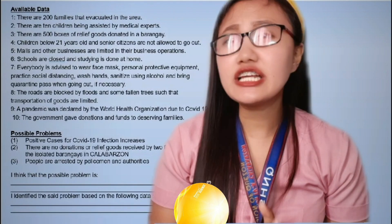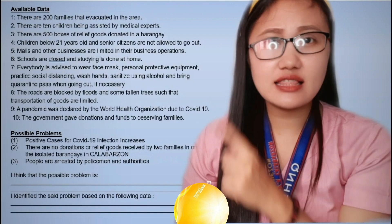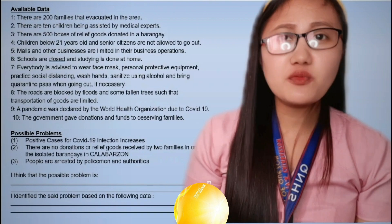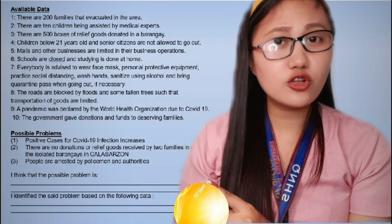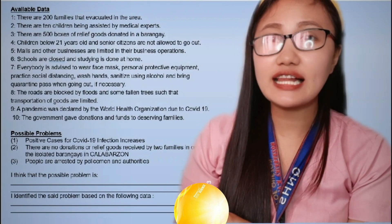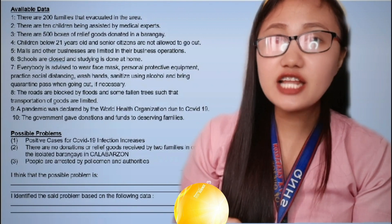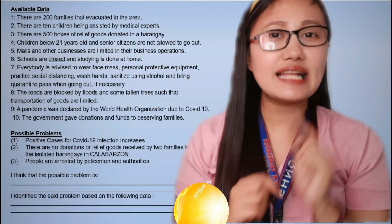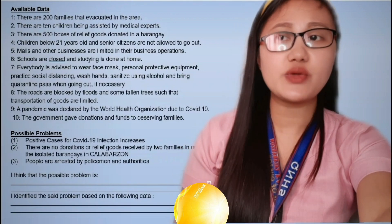For Learning Task Number 1, given dito yung available data — this is Column A. And Column B, this is the possible problem. Mapapansin nyo sa Column A, meron ditong 10 available data. At dito naman sa Column B, ay meron 4 tayong possible problems. Ang gagawin nyo sa Learning Task Number 1 is pupunan nyo lang itong nakalagin dito na 'I think that the problem is,' and then 'I identified the said problem based on the following data.' Dito sa first statement, pipili lang kayo ng isa from Column B, which are possible problems.